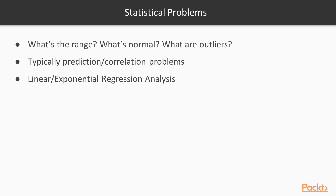Statistical problems — some of the questions we'll talk about in section three — include: what's the range, what's the normal value for this, and how do we pick out outliers? We'll also want to do predictive and correlation problems. Some of the techniques we'll use for this are linear and exponential regression, in order to figure out lines of best fit and be able to predict types of data that we don't already have.